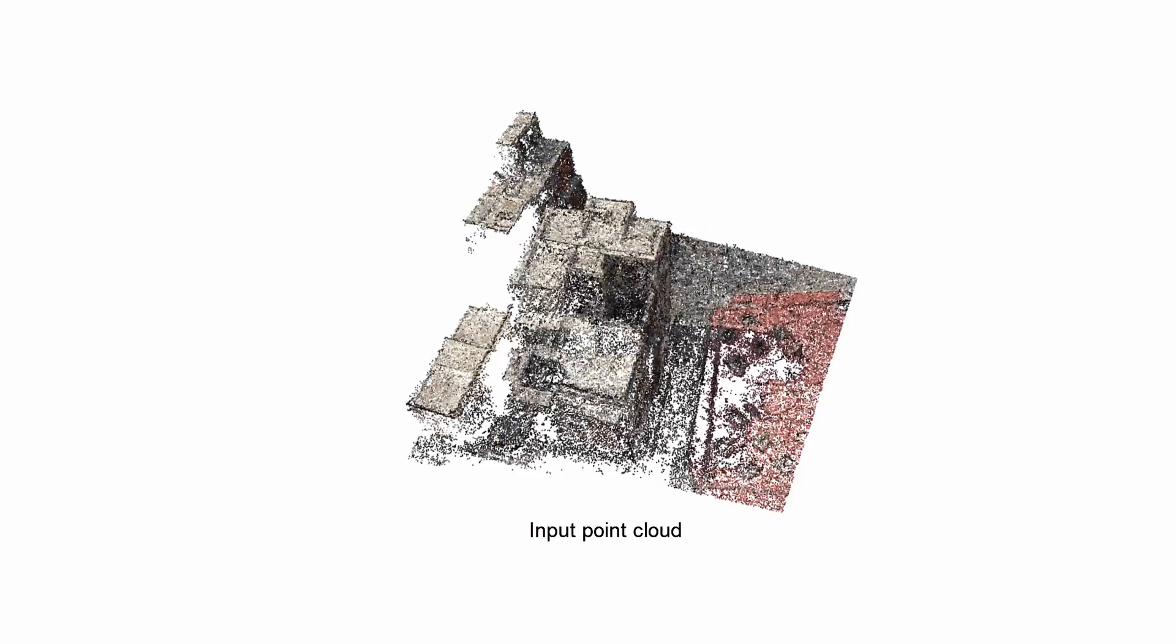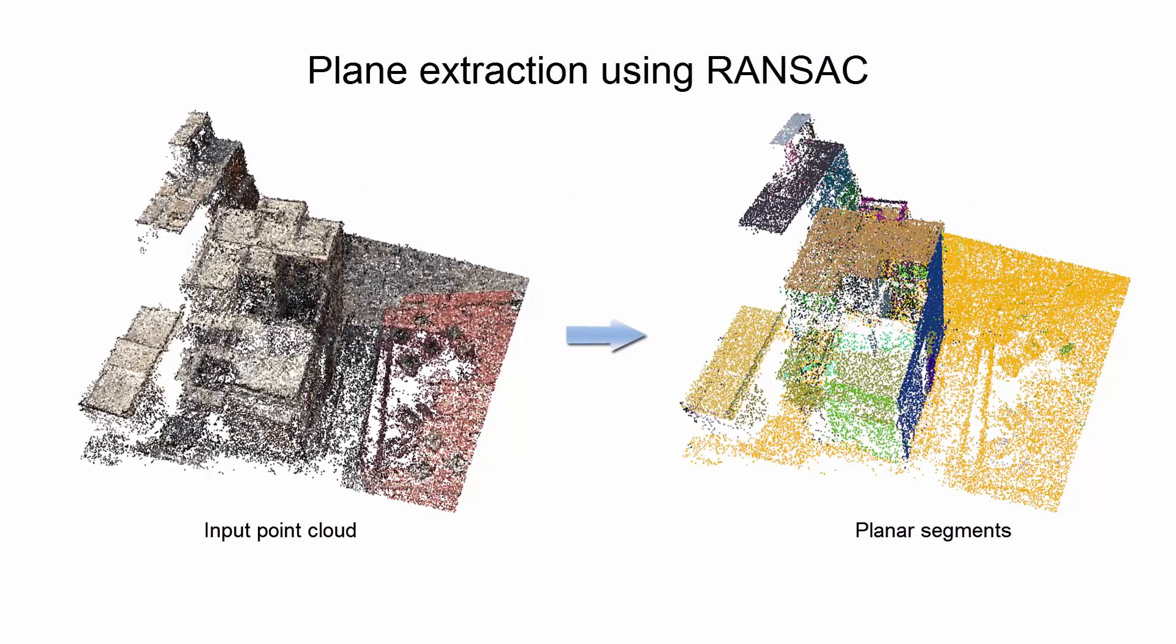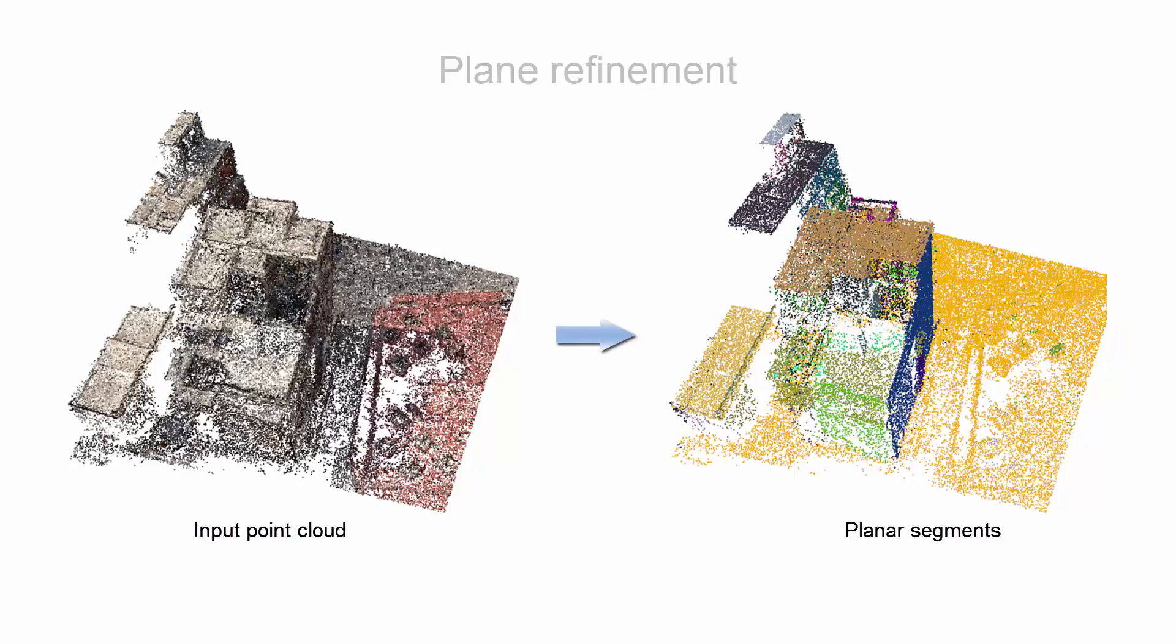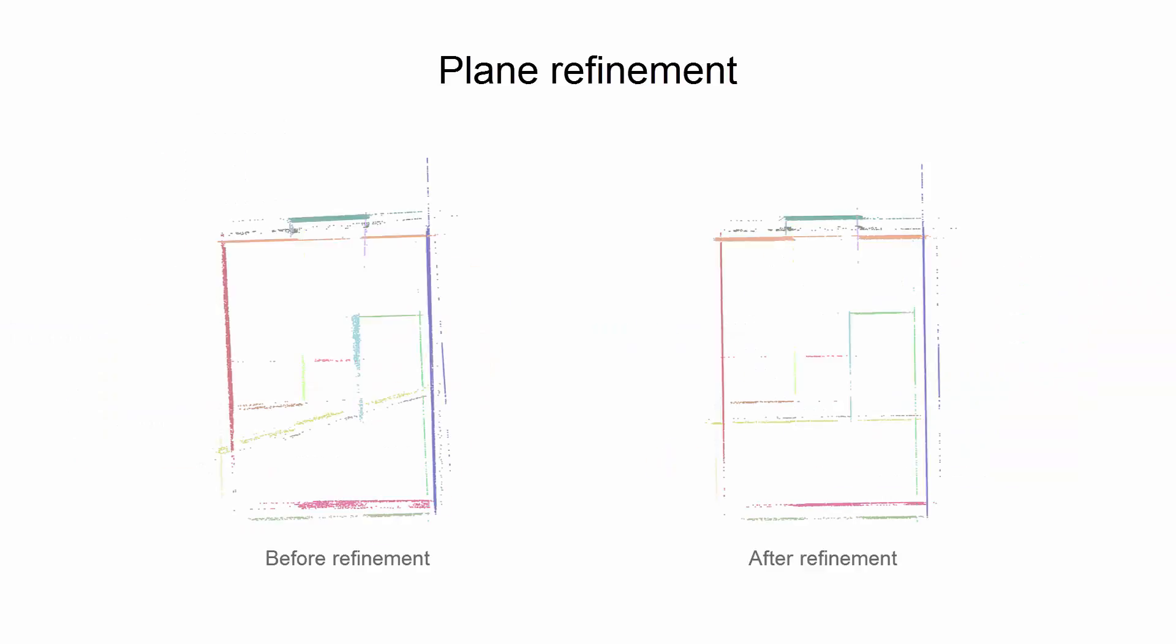Given an input point cloud, we first extract planar segments from the point cloud using RANSAC. Then we refine these planar segments such that they comply with dominant directions. Here we show the planar segments before and after the refinement.